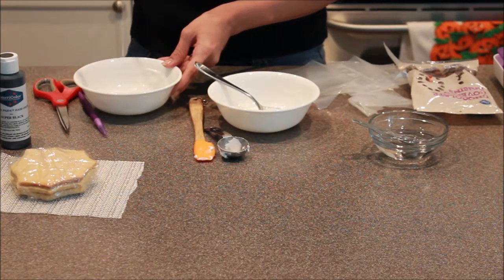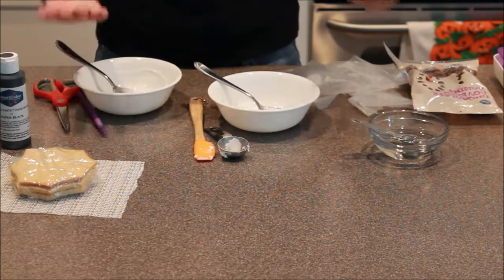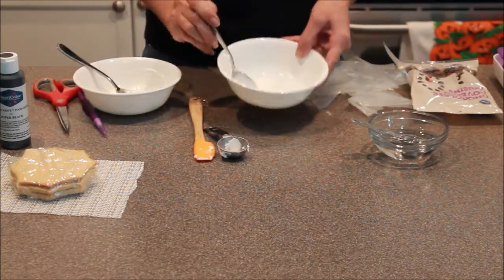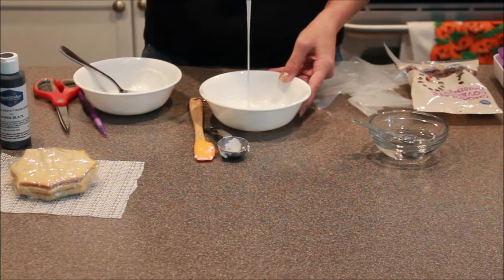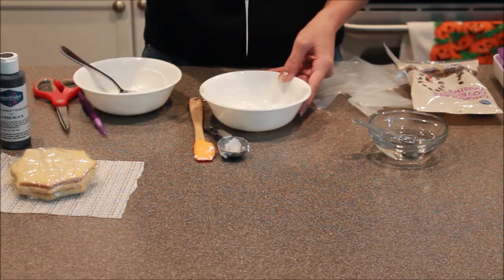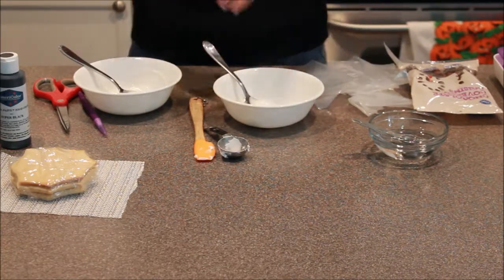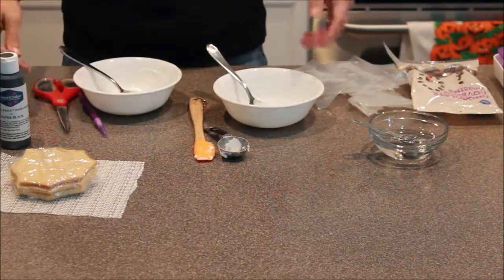If you were to put this directly on the cookie there's a good chance it just runs right off the sides, which is why you need the outlining consistency. You can see it runs pretty well. So you're going to work with your different consistencies until you get what you're needing.